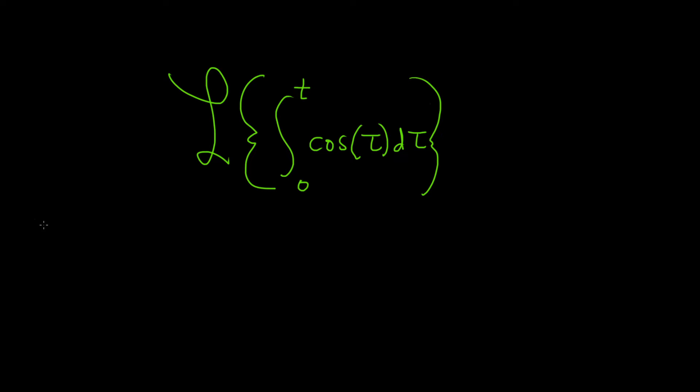Recall if you have two functions, f and g, we can take what's called the convolution of those functions. This is defined to be the definite integral from 0 to t of f of tau times g of t minus tau, d tau.